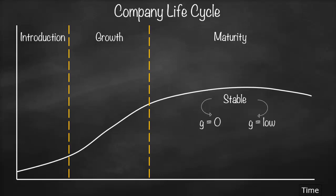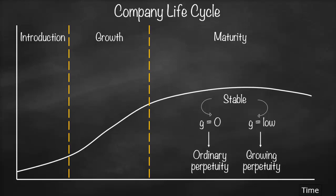When we talk about a company at the maturity phase — called a mature firm — it means the market is saturated, so the growth rate will be zero or low and stable. If we know it will continue forever and the growth rate is zero, we use ordinary perpetuity. If the growth rate is low and stable such as 1% or 2% every year forever, we use the growing perpetuity formula.